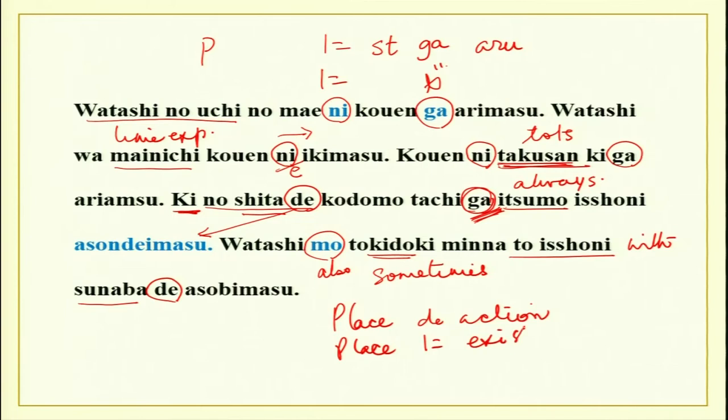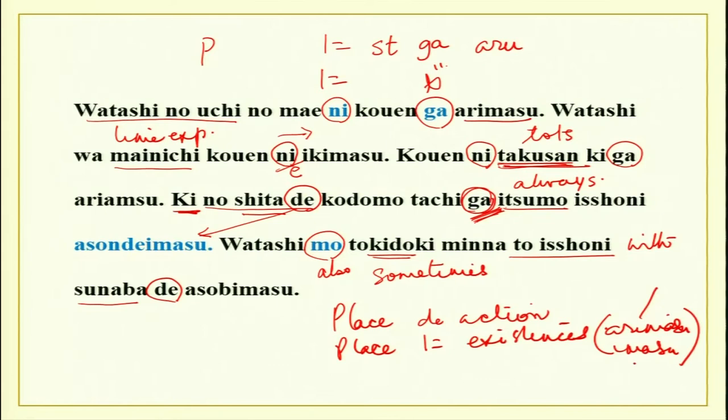Place de is used for action, and place ni is used for existence. Arimasu is for non-living things and imasu is for living things. This is written in Japanese for you — you can go over it, you will be able to recognize some kanjis, and we will cover the remaining kanjis in later lessons.